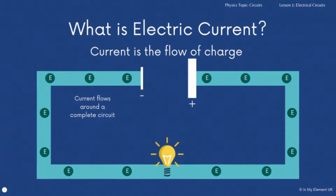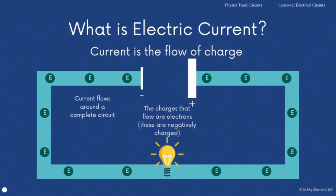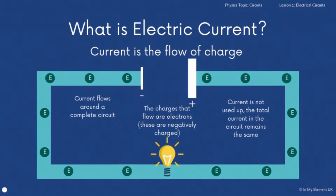What you've got to remember is that the current flows around a complete circuit — that means there is no break in a circuit, so there's not a split in the wire. Everything is connected. We've already mentioned that the charges that flow are electrons. You have to remember, and this is important in chemistry and physics, that the electrons are negatively charged. And the current isn't used up — it's the same at any point in the circuit.